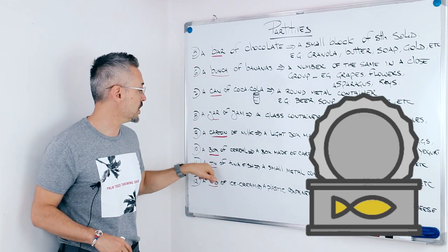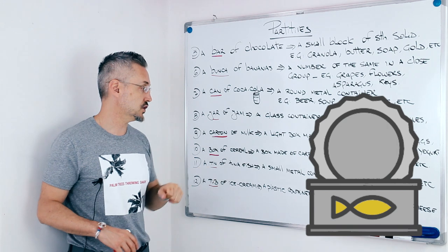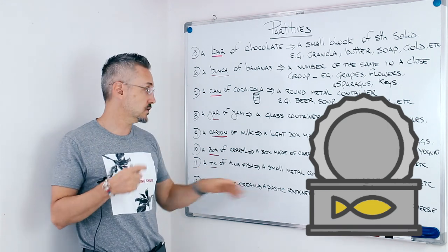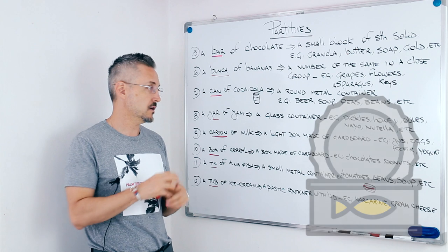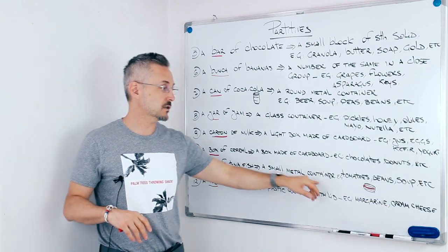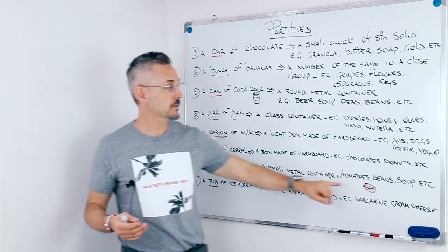The next one, as I mentioned before, a tin of tuna fish. It's a small round or even square, a rectangle metal container. For example, tomatoes.